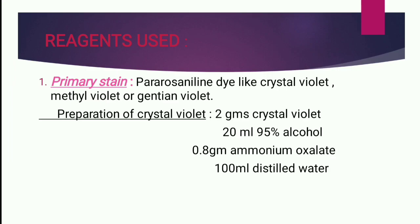There are basically four steps in gram staining. The stain used for primary staining is crystal violet, or methyl violet, or Jensen's violet — mostly we use crystal violet. Preparation: 2 grams of crystal violet, 20 ml of 95% alcohol, 0.8 gram of ammonium oxalate,